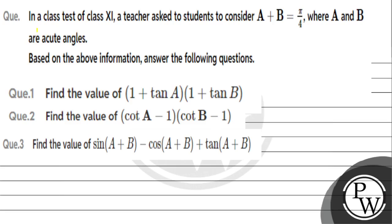Hello children, let's read the question. In a class test of 11th class, a teacher asked the student to consider a plus b equal to pi by 4, where a and b are acute angles. Based on the above information, answer the following questions: Question 1 - find the value of (1 + tan a) into (1 + tan b). Question 2 - find the value of (tan a - 1) into (tan b - 1). Question 3 - find the value of sin(a+b) minus cos(a+b) plus tan(a+b).